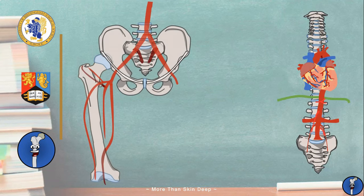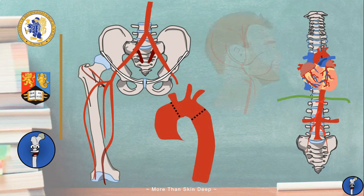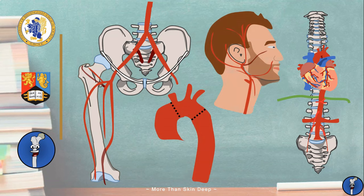As a medical student, the sheer number of named structures in the human body can seem totally overwhelming, not least the hundreds of blood vessels that you're required to learn in order to pass your exams. In this two-part series, we're going to help out a little bit by giving you a quick run-through of the major blood vessels in the human body, starting with the arteries.